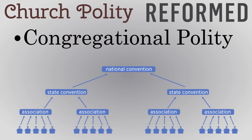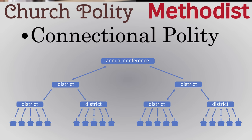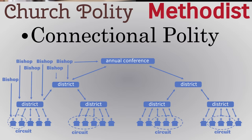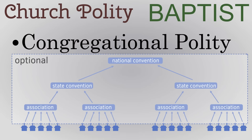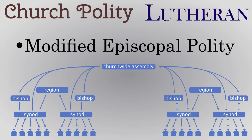Methodists often have Connectional Polity, in which there are various districts containing local churches, which are part of conferences, and a general conference at the top. In some cases, ministers are in circuits within the conferences. If there are bishops, this is a form of Episcopal polity, though not all Methodists have bishops — those that do may have bishops appoint ministers to local churches. Some Methodist denominations are congregational as well. Baptist churches are Congregational in polity; denominations or conventions cannot force churches to do anything, and local churches choose their own ministers and often make their own statements of faith. Lutherans sometimes have an Episcopal or modified Episcopal polity with bishops, and sometimes they're congregational.